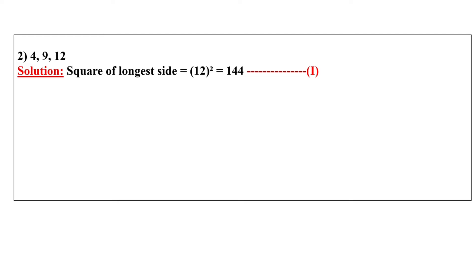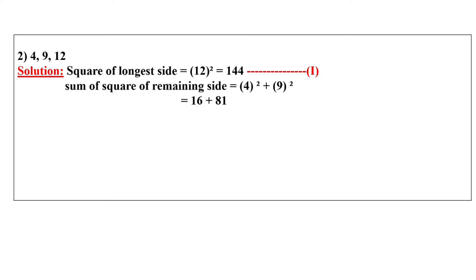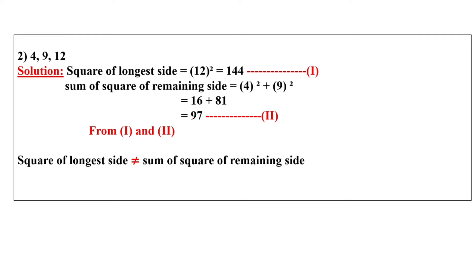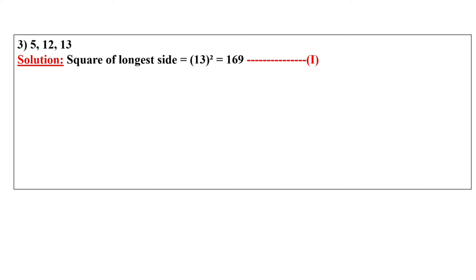Now let's start with the second sum: 4, 9, 12. Among these, the longest side is 12; square of 12 is 144, give equation number 1. The two remaining sides are 4 and 9: square of 4 is 16, square of 9 is 81, so the addition we get 97, give equation number 2. From first and second, first we got 144, second we got 97, which is not equal. So square of longest side is not equal to sum of the square of remaining sides. Therefore it is not a Pythagorean triplet. The same way we can do all the sums given in question number 1.